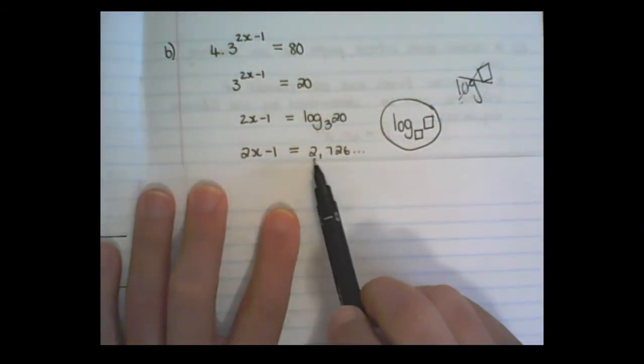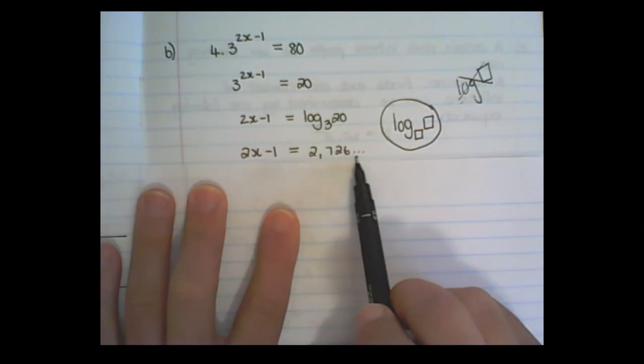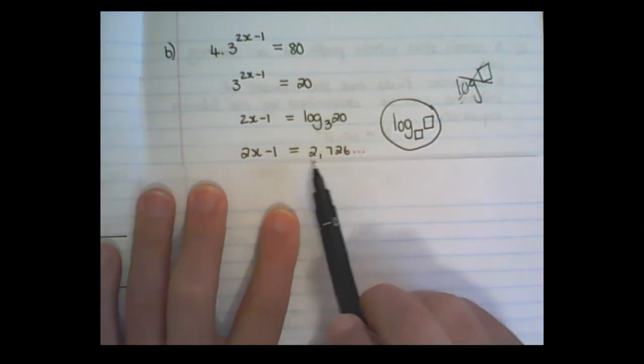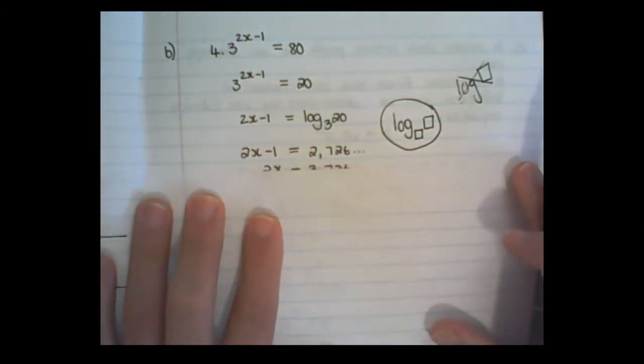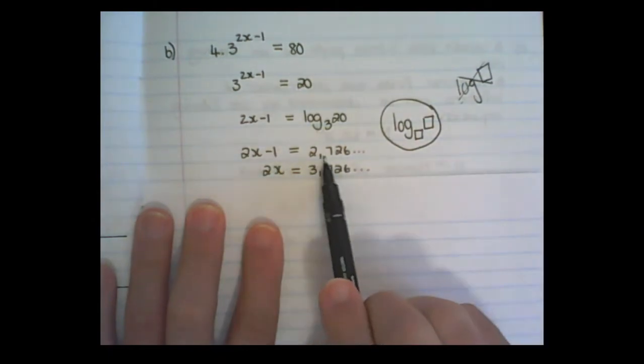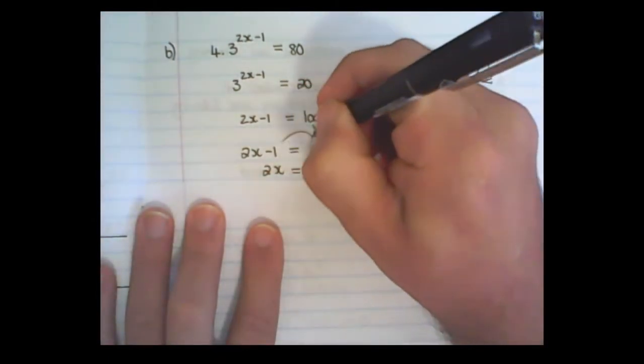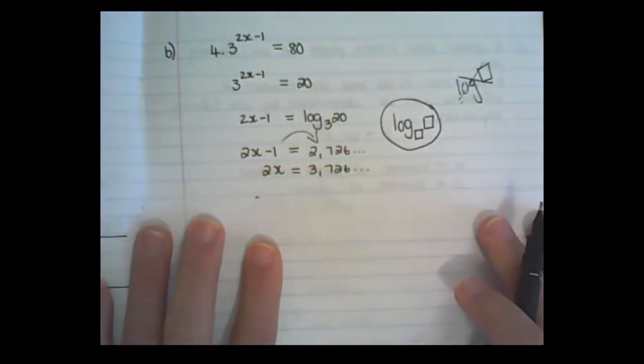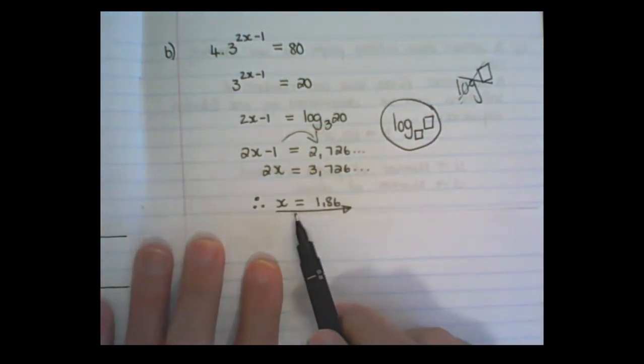So the calculator produces 2.726 and a few more decimal places. And now I can solve x. I move the one over by adding it on the right. Then I divide both sides by 2. And I round off my answer to two decimal places.